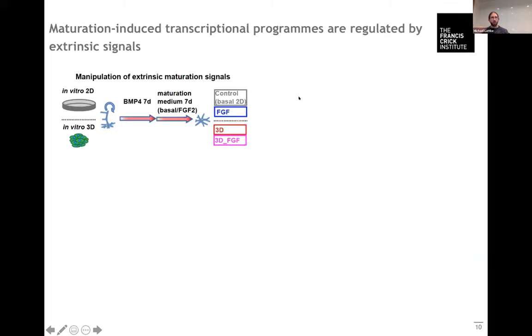The question is now what regulates in normal conditions this upregulation of these transcription factors that are lacking in vitro. Obviously in vitro a lot of signals are missing that might promote the maturation in vivo. So we were using different culture conditions to see whether we find signals that promote maturation. For this we were using either the addition of FGF or the culture in 3D conditions, which have been shown to promote some level of functional maturation of astrocytes in culture.